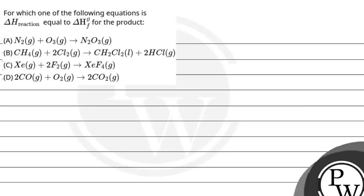Let's read this question. The question says: for which of the following equations is delta H reaction equal to delta H°f for the product? So, which reaction's change in enthalpy of the reaction equals the change in enthalpy of product formation — that we have to find out. Four options have been given: A, B, C, and D.